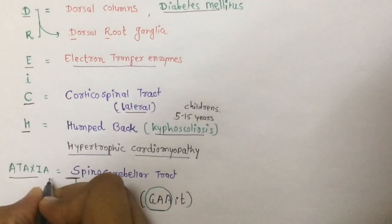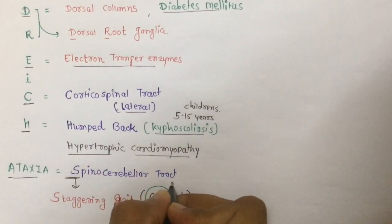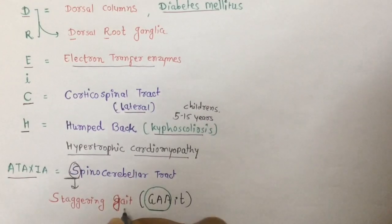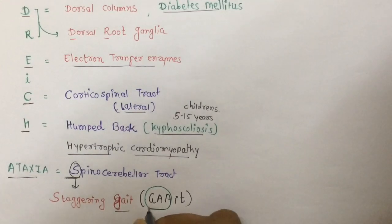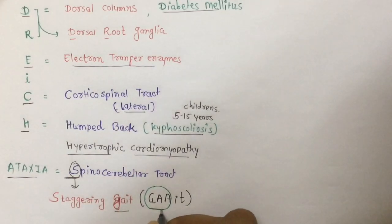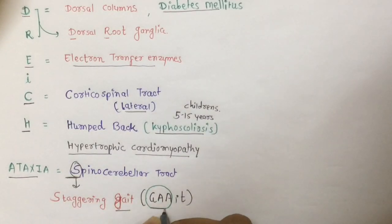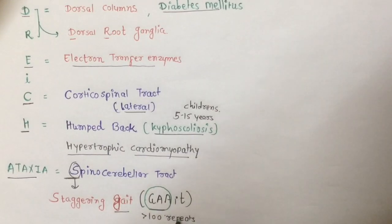From H, you can remember hypertrophic cardiomyopathy, which is the most common cause of death in Friedreich's Ataxia. From A, ataxia is due to spinocerebellar tract involvement. From S, you can remember the trinucleotide repeats — in Friedreich's Ataxia the repeat is GAA, with more than 100 repeats, and anticipation may occur in subsequent generations.